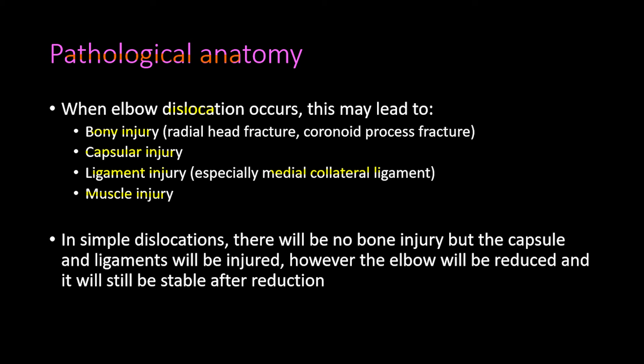In simple dislocations there will be no bone injury, but the capsule and ligaments will be injured. The elbow can be reduced and will still be stable after reduction. Generally, simple dislocations have no bony injury while complex dislocations have bony injury in addition to the dislocation, and simple dislocations carry a good prognosis.